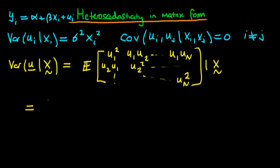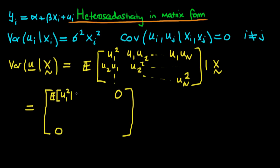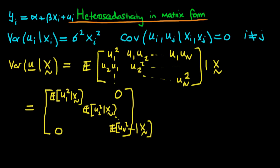We can still assume each off-diagonal component equals zero since we're assuming no autocorrelation. But for the diagonal components we need to be more careful. Taking the expectations operator inside the matrix, the diagonal components are E(u1²|x), E(u2²|x), ..., E(un²|x). Each of these is in the same form as the stated variance, because if E(ui|x) = 0, then the variance equals the expectation of ui squared.